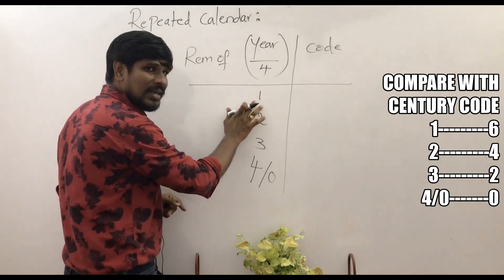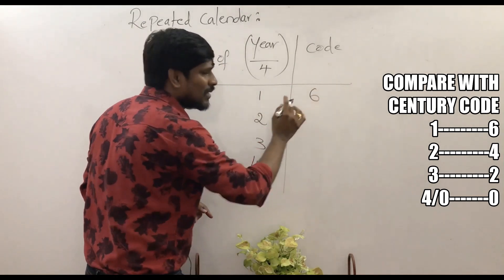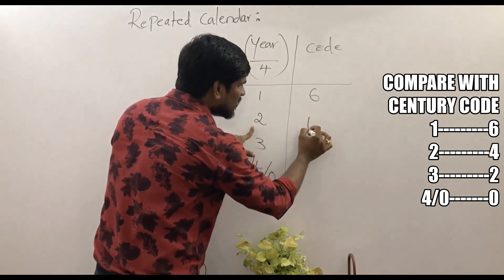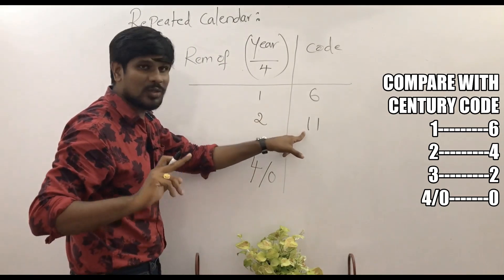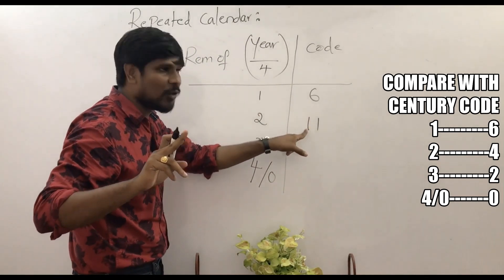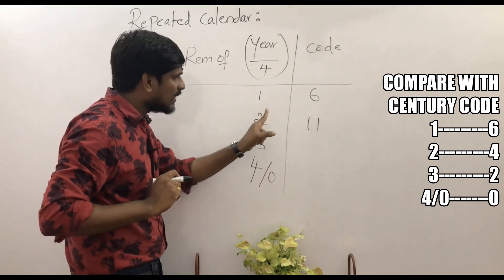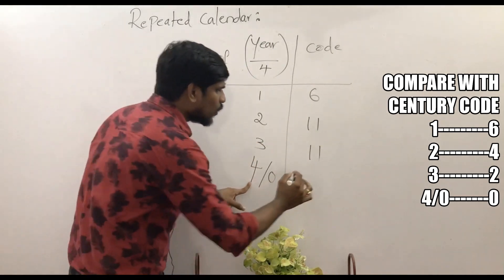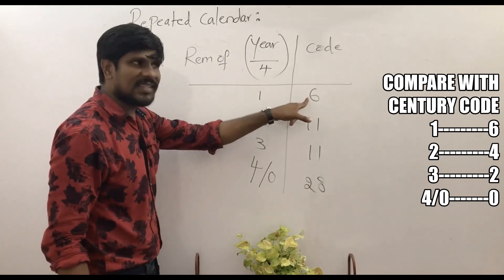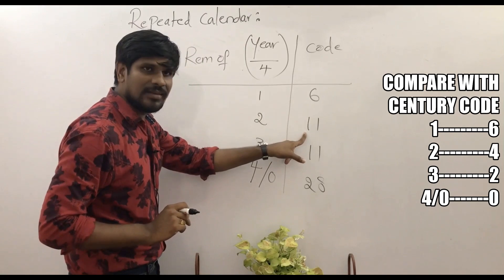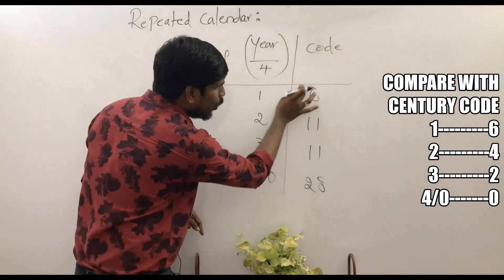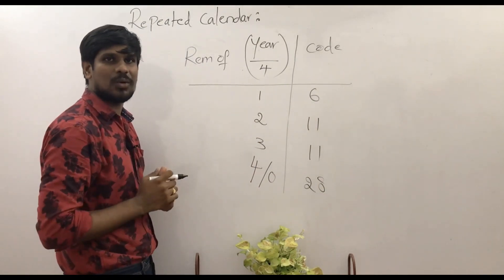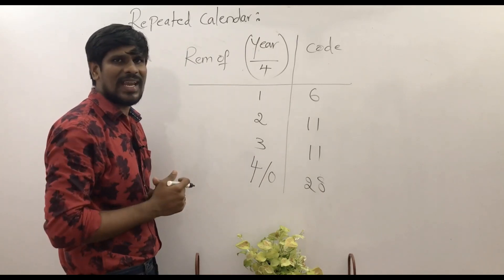The next: 1 remainder code is 6, century code is also 6. 2 remainder code is 11, but in century code 4 is the century code. 1's code is 6, 2's code is 11, 3's code is 11, 4's code is 28.